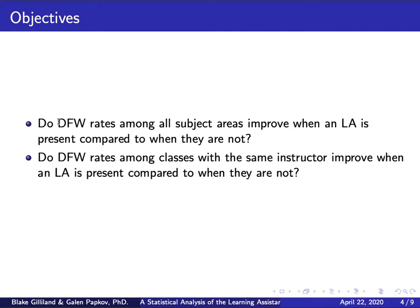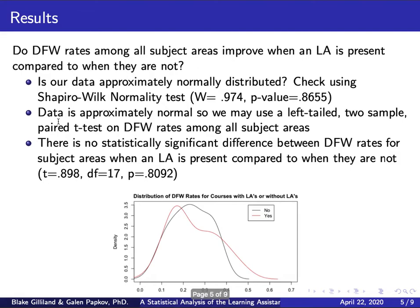For the second question, we hold the instructor constant and compare their courses. If an instructor teaches two sections of the same course — one with a learning assistant and one without — how do those DFW rates compare? We do this analysis across multiple instructors.